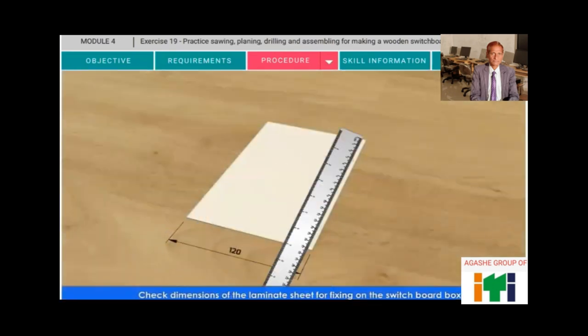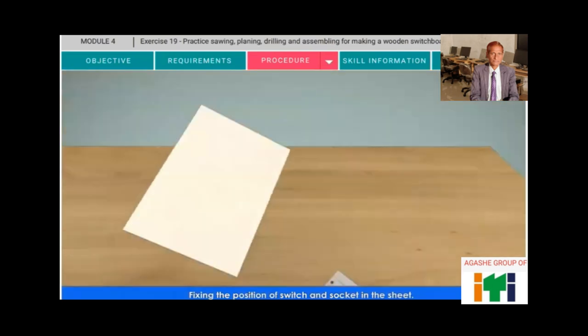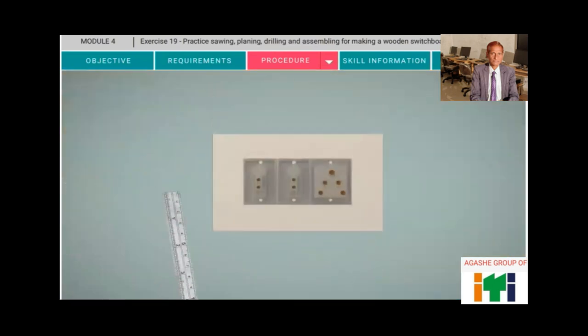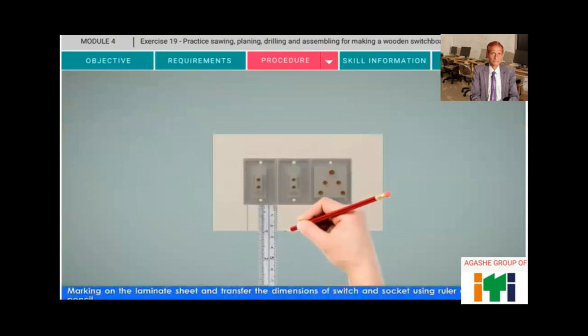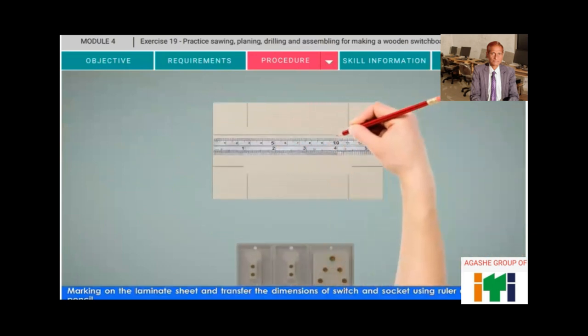Check dimensions of the laminate sheet for fixing on the switchboard box. Fix the position of switch and socket in the sheet. Marking on the laminate sheet and transfer the dimensions of switch and socket using ruler and carpenter pencil.